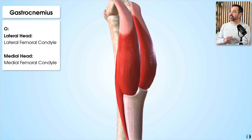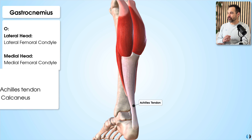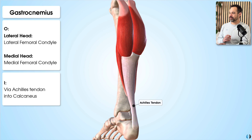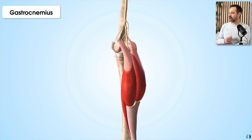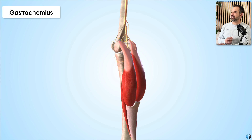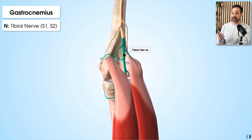The gastrocnemius inserts via the Achilles tendon into the calcaneus of the foot — the Achilles tendon being what both the gastrocnemius and soleus are well known for. The nerve supply for this muscle comes from the tibial nerve, originating from nerve roots S1 and S2.